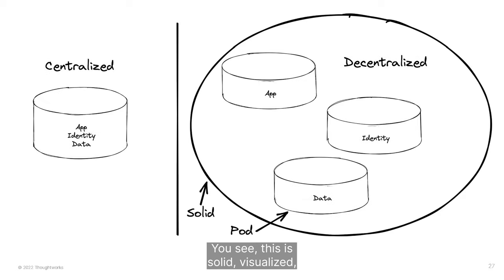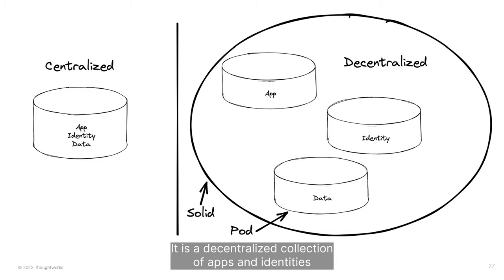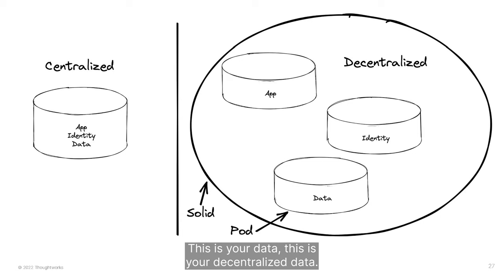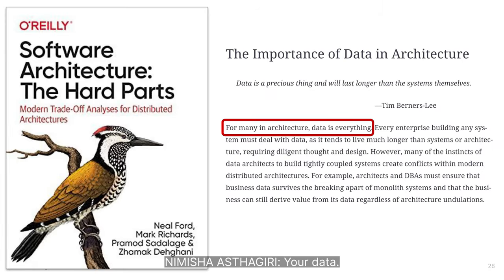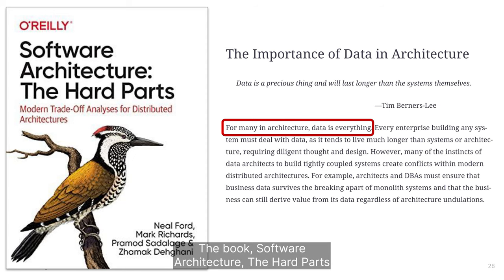This is Solid visualized: small pieces loosely joined. It is a decentralized collection of apps, identities, and data stores — Personal Online Data Stores: Pods. This is your decentralized data. The book 'Software Architecture: The Hard Parts' discusses the importance of data in architecture. The authors go so far as to say that for many in architecture, data is everything.